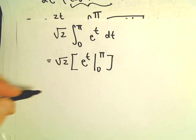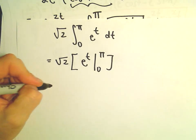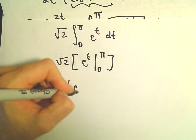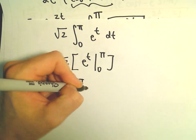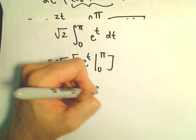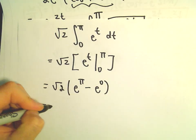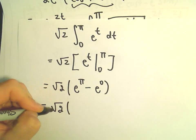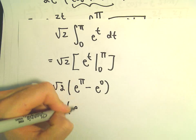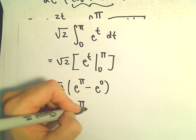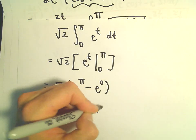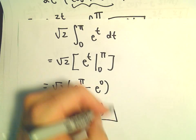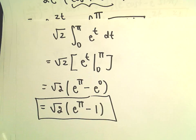Plugging in our limits of integration, we have the square root of 2 times e to the pi minus e to the 0. So our final answer is the square root of 2 times (e to the pi minus 1).